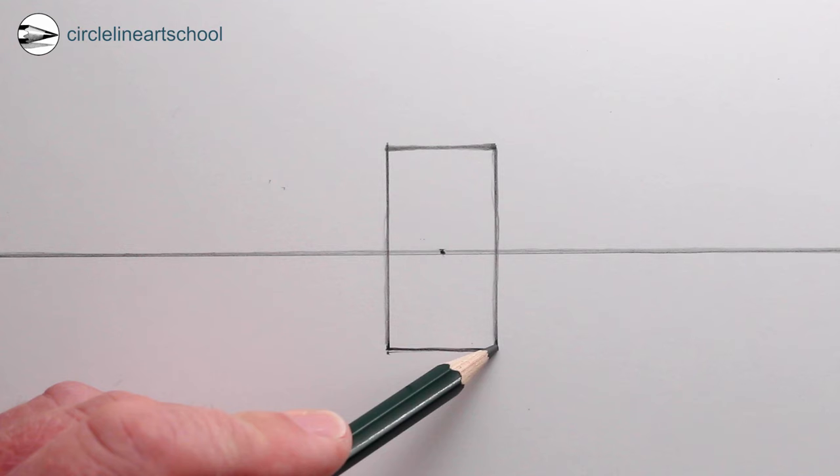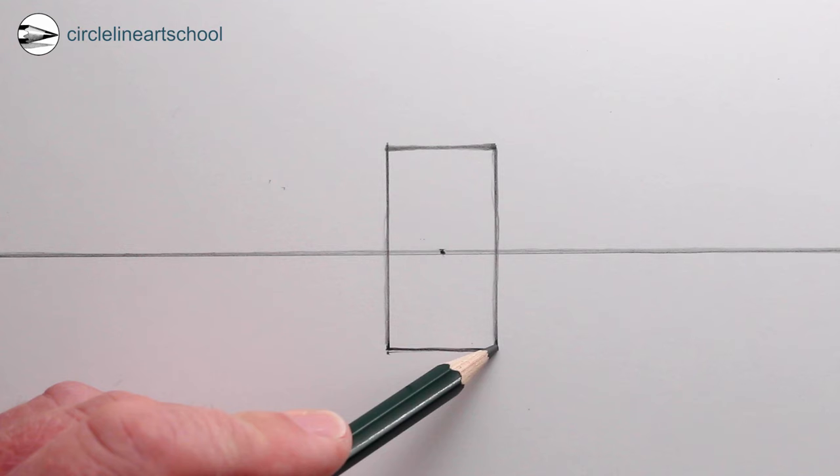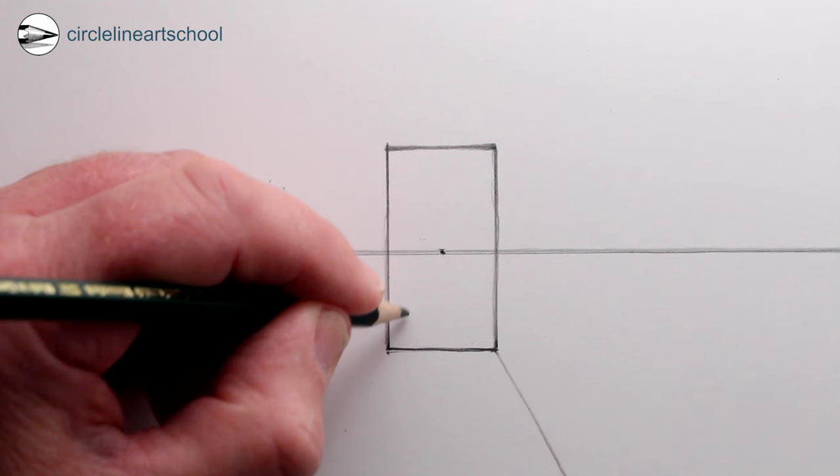Next we can use the vanishing point and draw a line coming towards us from the bottom right of the doorframe, and then another line from the left-hand base of the doorframe, again towards us.